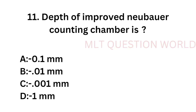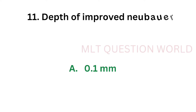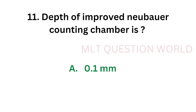Question number 11: Depth of improved Neubauer counting chamber is — option A: 0.1 mm, option B: 0.01 mm, option C: 0.001 mm, option D: 1 mm. The correct answer is option A, 0.1 mm. Depth of improved Neubauer counting chamber is 0.1 mm.